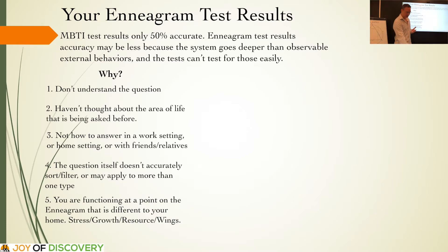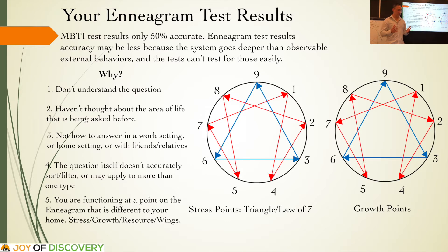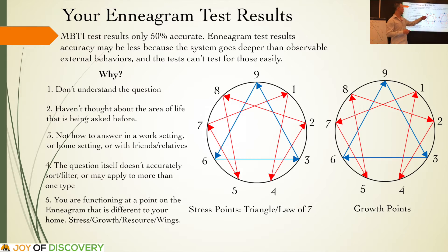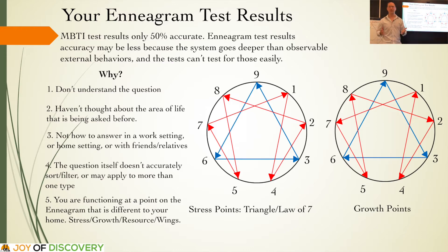Something quite interesting with the Enneagram is its dynamic system. You can move around on all the different points on the diagram. The Enneagram shows that you're functioning at a point that is sometimes different from your home point. Because of stress, you may move along the arrows — the stress points. For example, one may move to four under stress, four moves to two, two moves to eight. You can keep moving around the Enneagram and may end up at a point very different from your home point based on your level of stress.